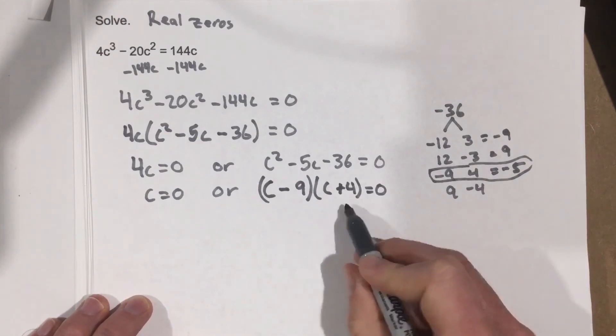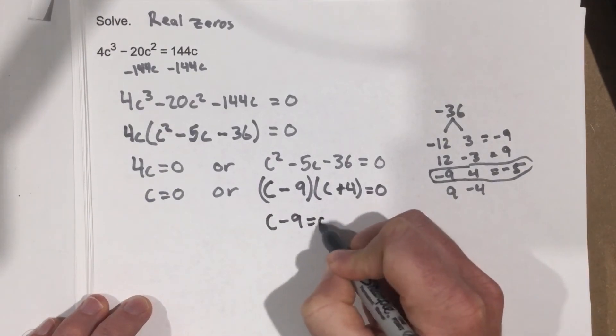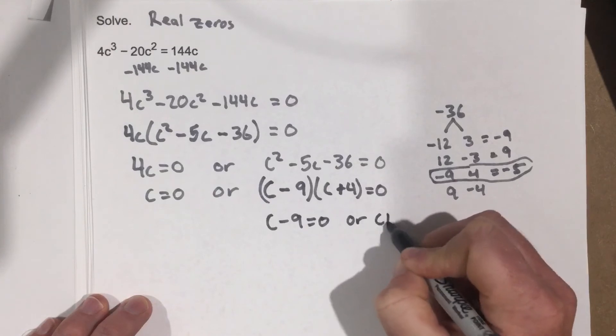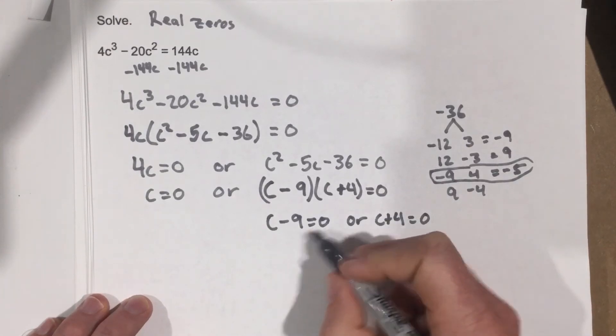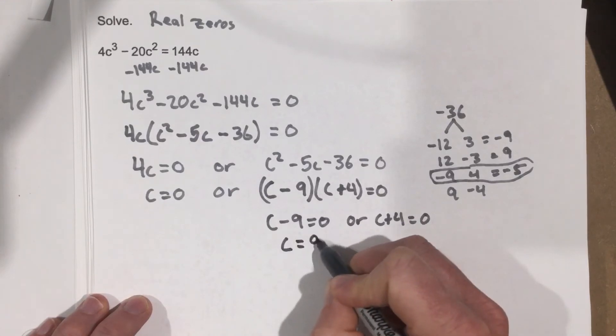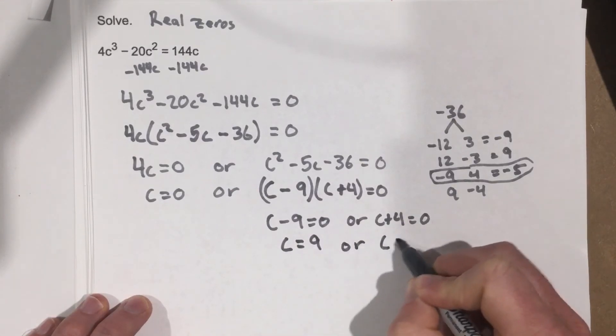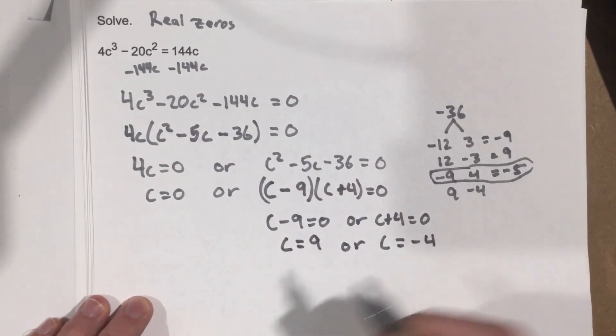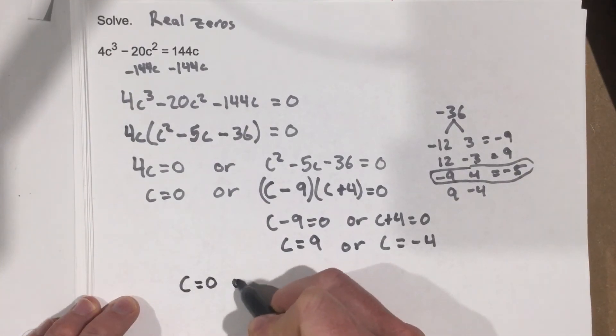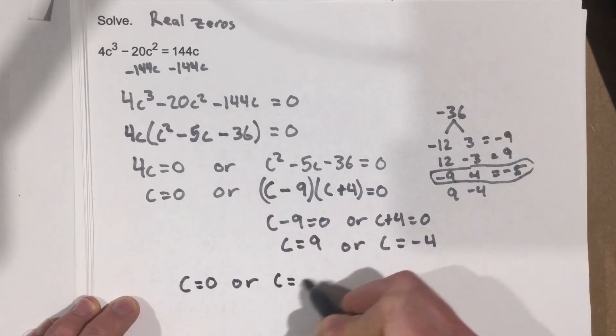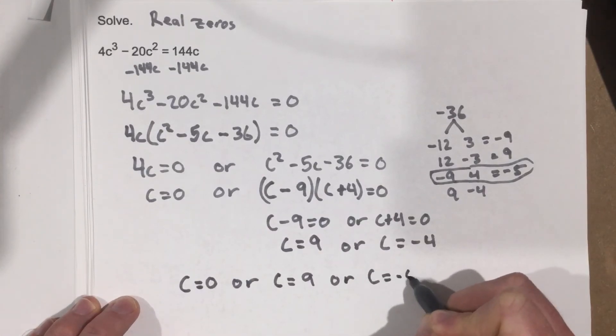Zero product property again, so c minus 9 equals 0, or c plus 4 equals 0. Add the 9 over, we get c equals 9, or c equals negative 4. So our solutions then are c equals 0, or c equals 9, or c equals negative 4.